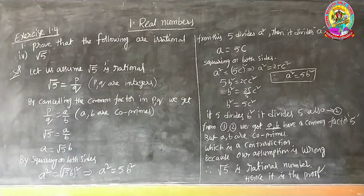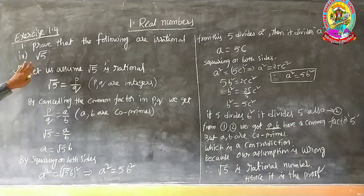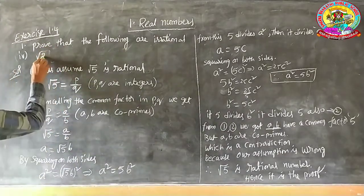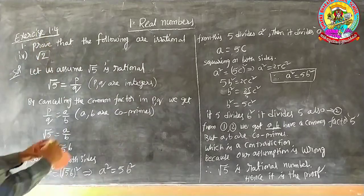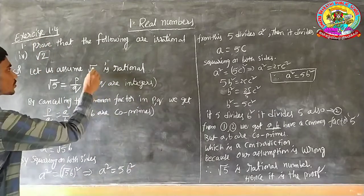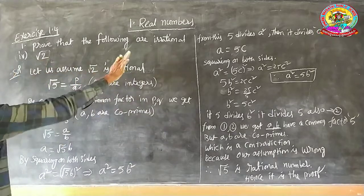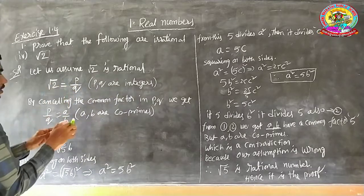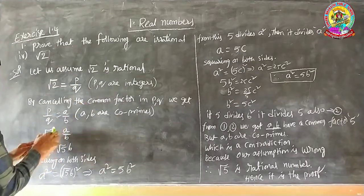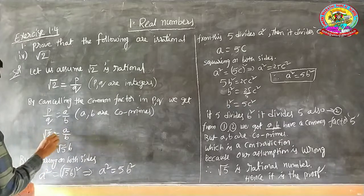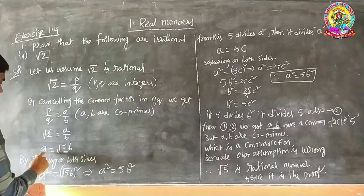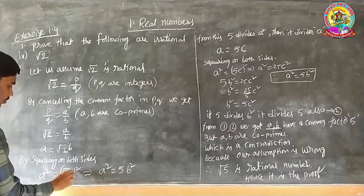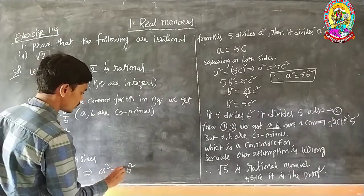If the same question asks you to prove root 2 is irrational, you can follow the same procedure. Assume root 2 is rational — it is possible to express as P by Q. By cancelling you get A by B. Root 2 equals A by B, so A equals root 2 times B. Squaring: A squared equals 2B squared.